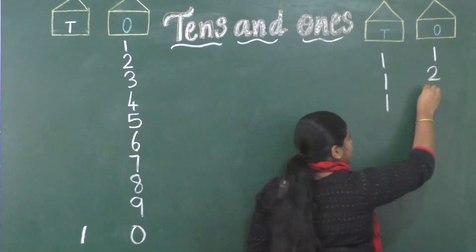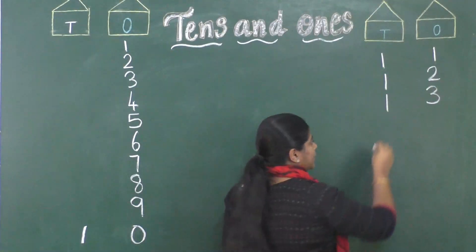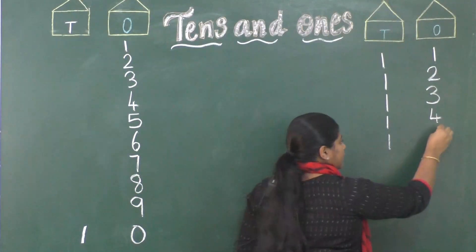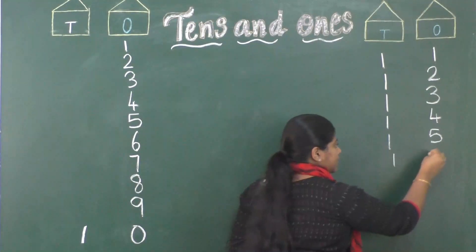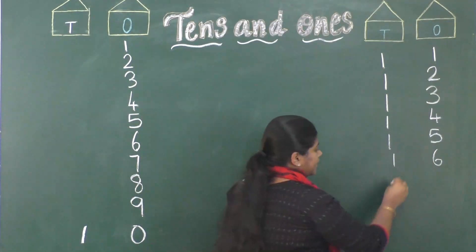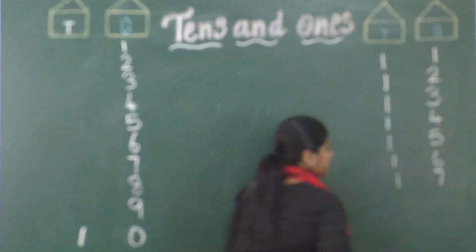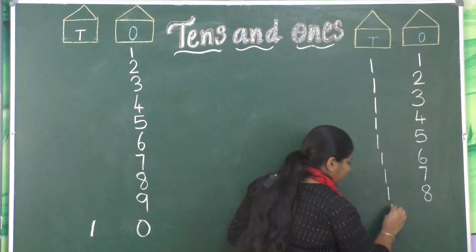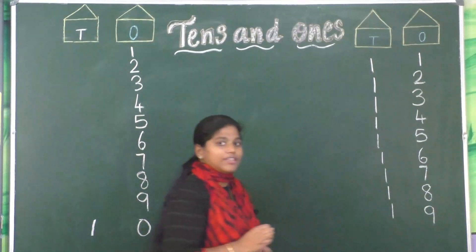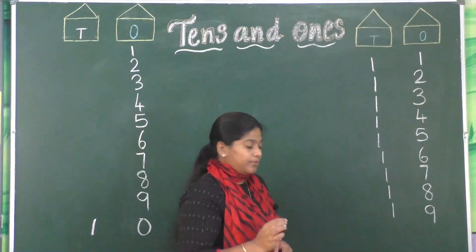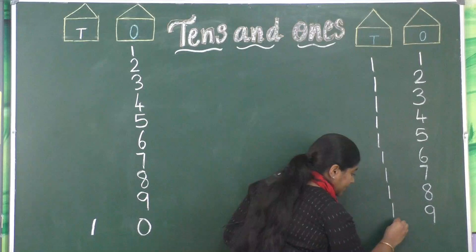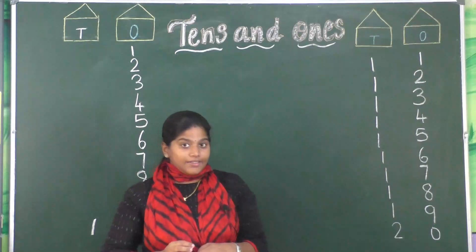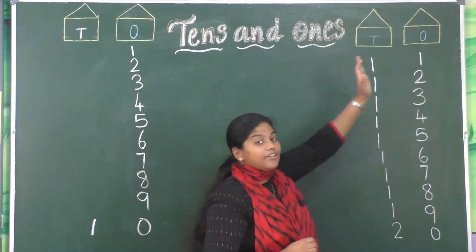Then 13: 1, 3. Then 14: 1, 4. Then 15: 1, 5. Then 16: 1, 6. Then 17: 1, 7. Then 18: 1, 8. Then 19: 1, 9. And how to write 20? It's 2, 0 — first we write 2 in tens place and 0 in ones place. This is how we write 20 in tens and ones place.